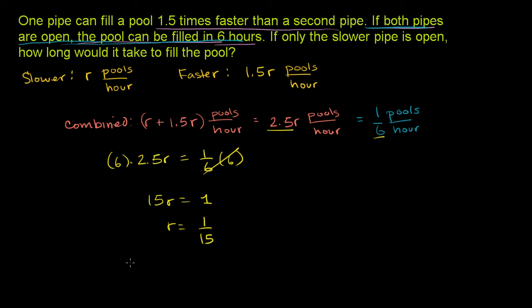And let's see how that might make sense. So we know that the slower pool is R pools per hour, or we could say it is 1 fifteenth of a pool per hour. Or you could view it as to do one pool, it takes 15 hours.